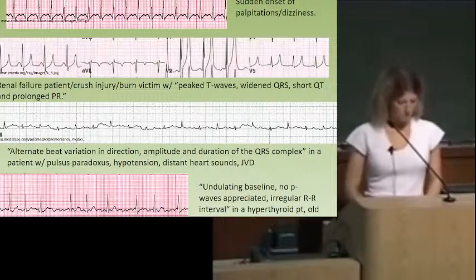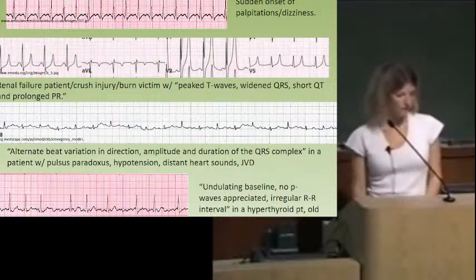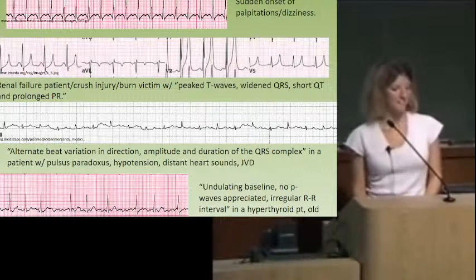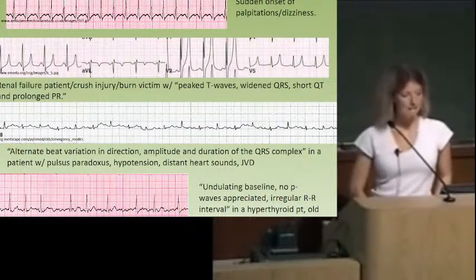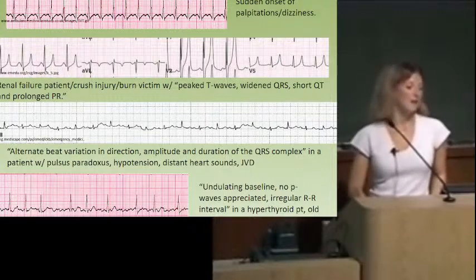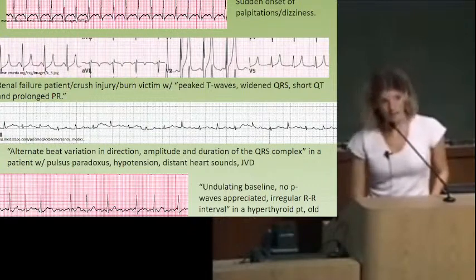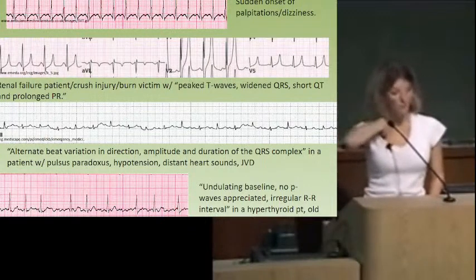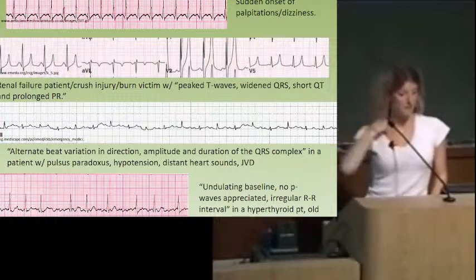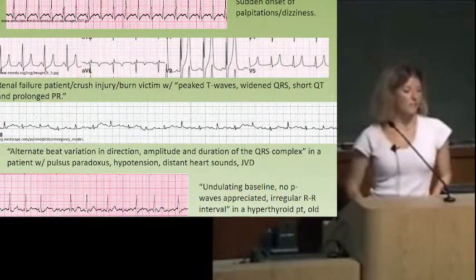The second EKG: look at those peaked T-waves. That makes us think of hyperkalemia. In the clinical vignette, they might tell you this is a renal patient who missed dialysis appointments, or a crush injury, or a burn victim. The EKG findings of hyperkalemia: T-waves are peaked, QRS is wide, QT interval is short, and PR interval is long. Know all of these if you want to be safe.